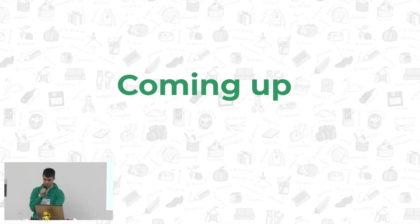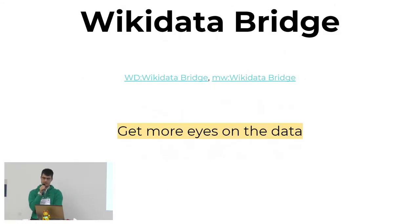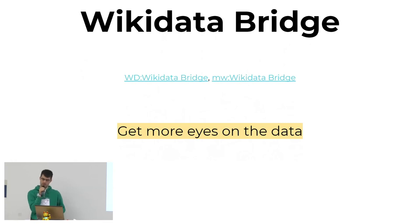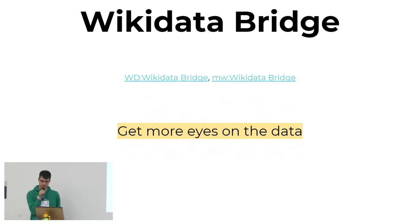Now for the things that are coming up. Wikidata Bridge, also formerly known as client editing, is about editing Wikidata from Wikipedia info boxes. On the one hand, it will get more eyes on the data because more people can see the data there. It will hopefully encourage more use of Wikidata in the Wikipedias, and that means that more people can notice if some data is outdated and needs to be updated.